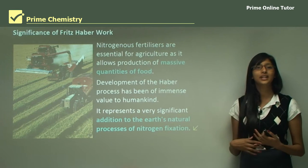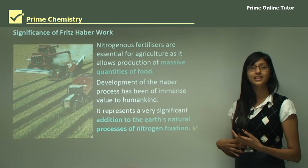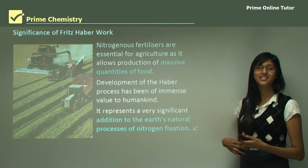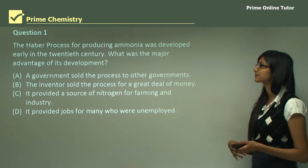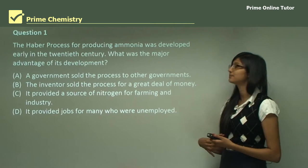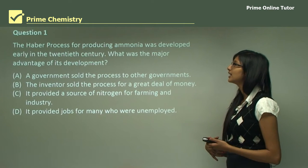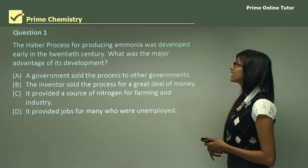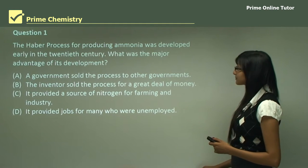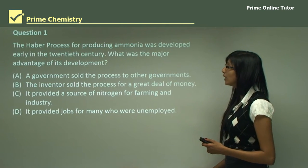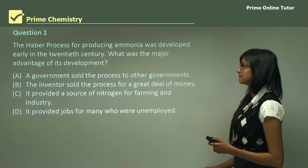This brings us to the end of the theory session. Now let's look at some questions to test your knowledge. Question 1: The Haber process for producing ammonia was developed early in the 20th century. What was the major advantage of its development?